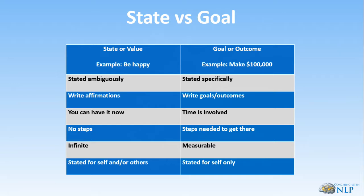A state can be stated ambiguously — like 'I want to be happy' — because what does happy actually mean? Whereas a goal has to be very specific, such as a hundred thousand dollars or a million pounds. With states, we can write affirmations like 'every day in every way I'm feeling better and better,' whereas with a goal we are writing the specific outcome. Remember we looked at how SMART goals should be written.